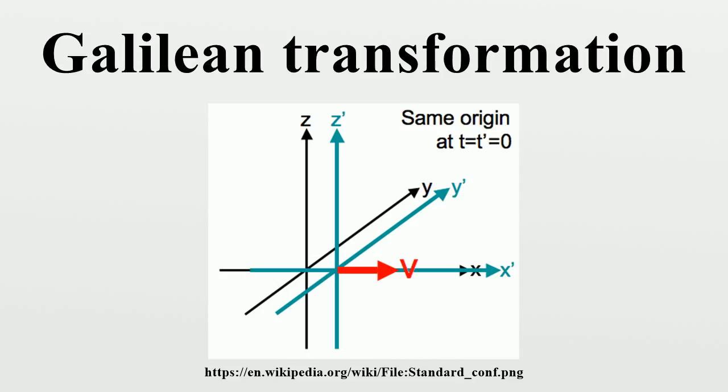A translation is given by where h in R3 and b in R. A rotation is given by where g in R3 to R3 is an orthogonal transformation.